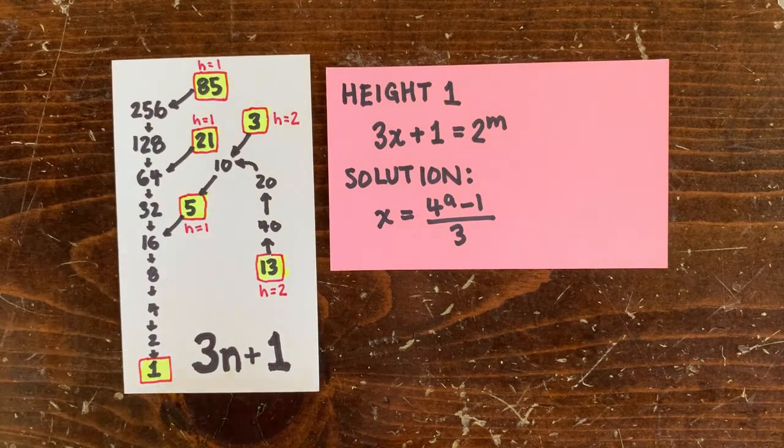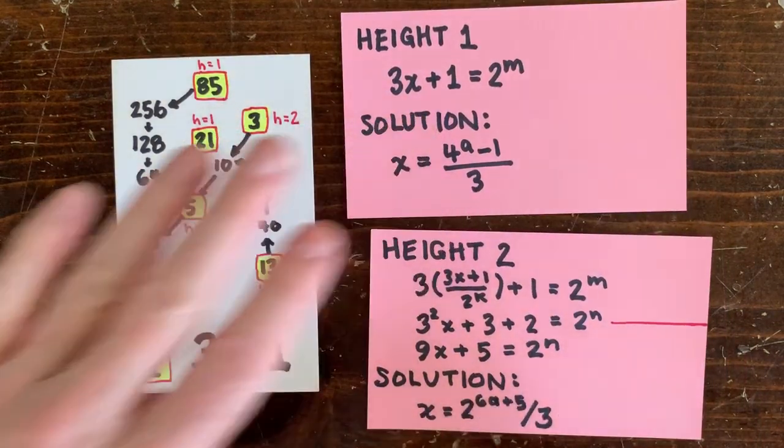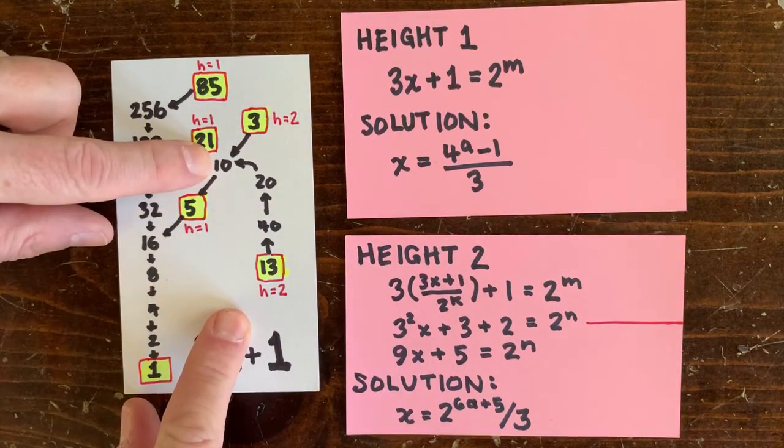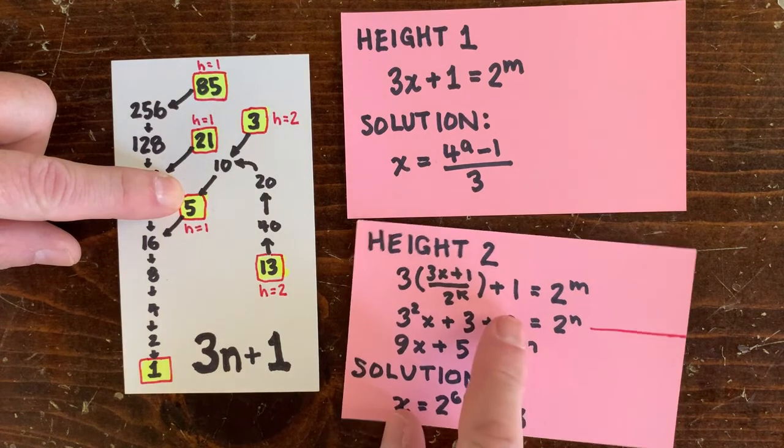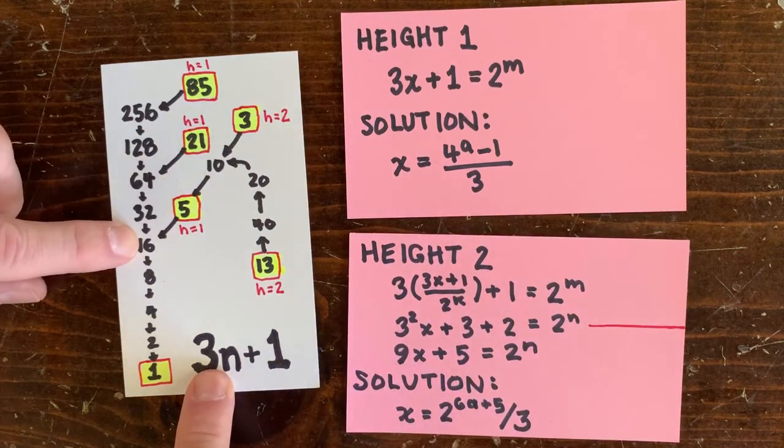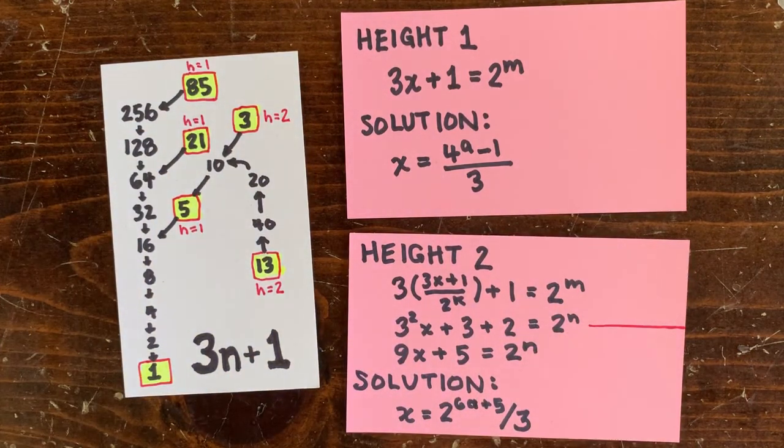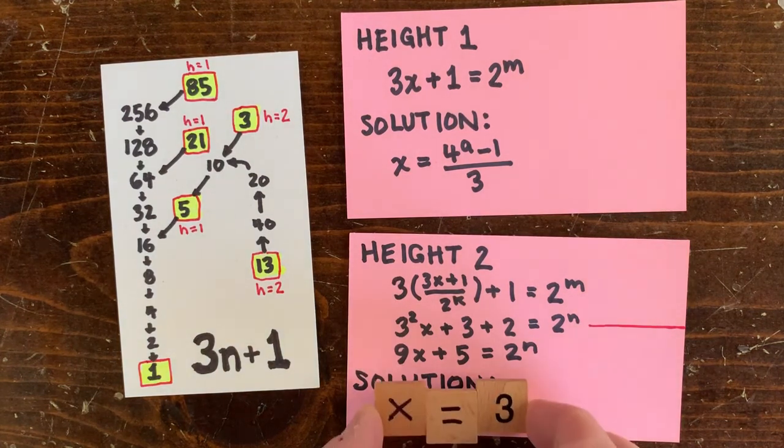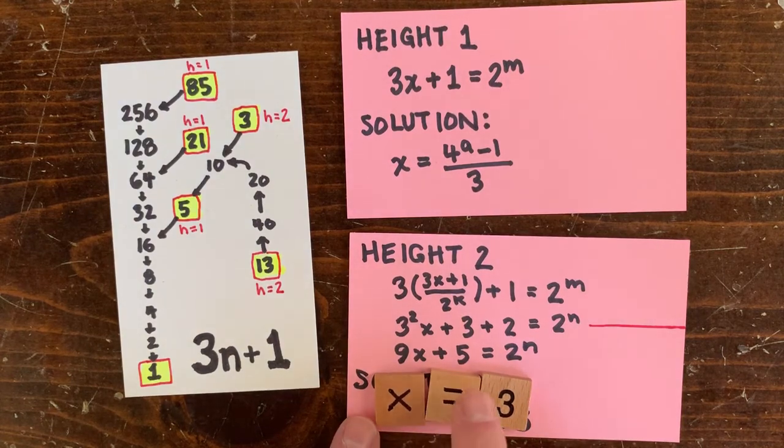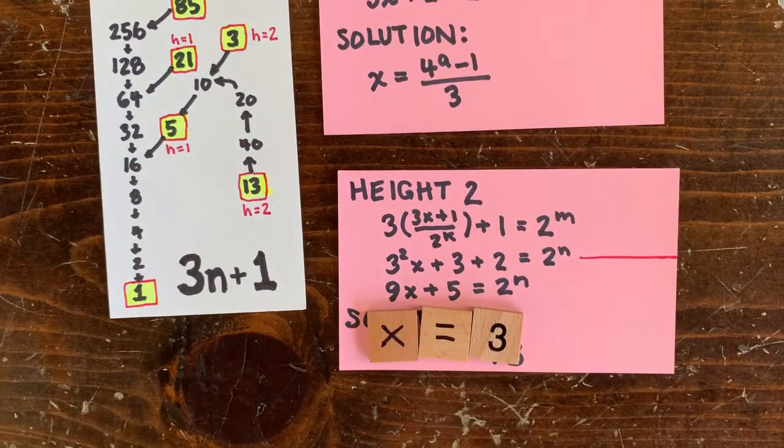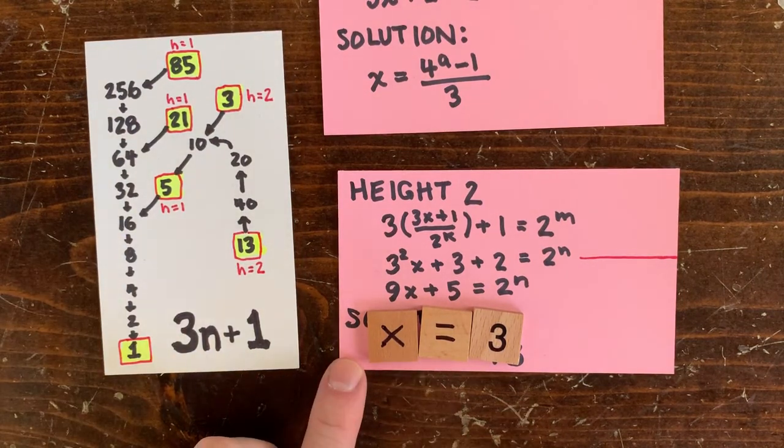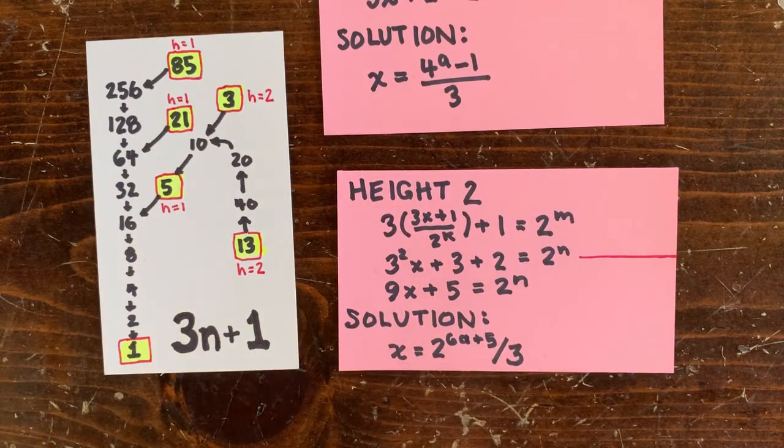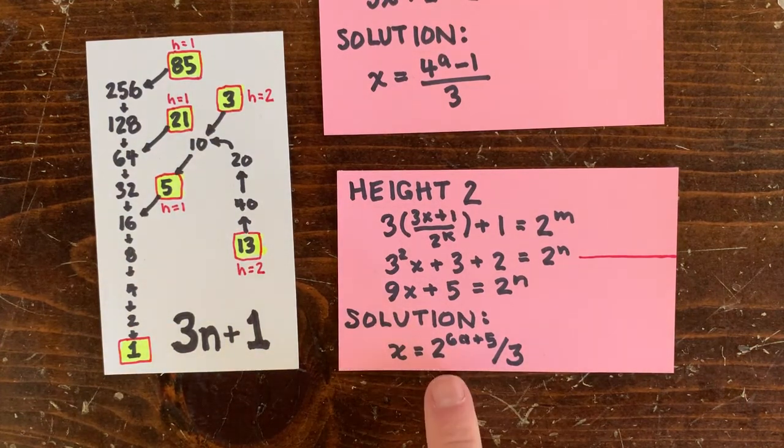We can characterize a height 2 number like this. We multiply it by 3 and add 1, divide by 2 some number of times, resulting in another odd number of height 1, which we multiply by 3 and add 1, which results in a power of 2 and a quick trip to the bottom. We can simplify this equation down to here. And obviously, one solution to this equation is x equals 3. 27 plus 5 equals 32 is a power of 2. So 3 is an example of a height 2 number. There's an infinity of height 2 numbers.